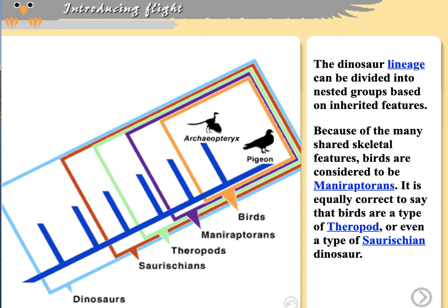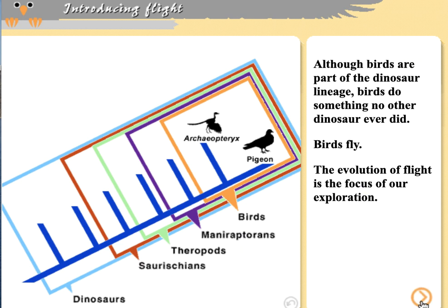Finally, we recognize birds as a group within this tree. Exactly where we draw this box is up for debate — we could include Archaeopteryx or just modern birds like pigeons. These organisms are maniraptorans, theropods, saurischians, and dinosaurs. They have an extra set of characteristics, particularly once we get into birds proper, that may be absent from some other maniraptorans.